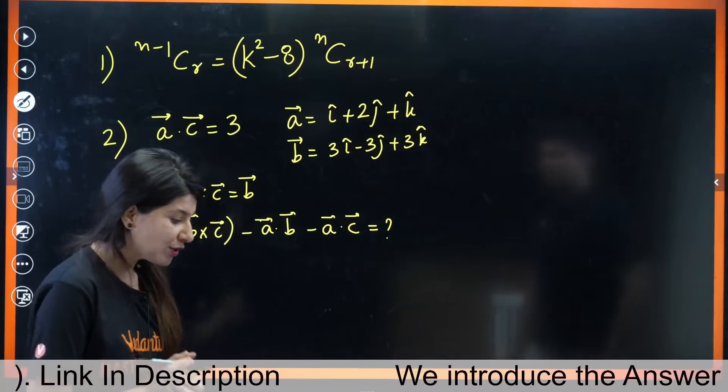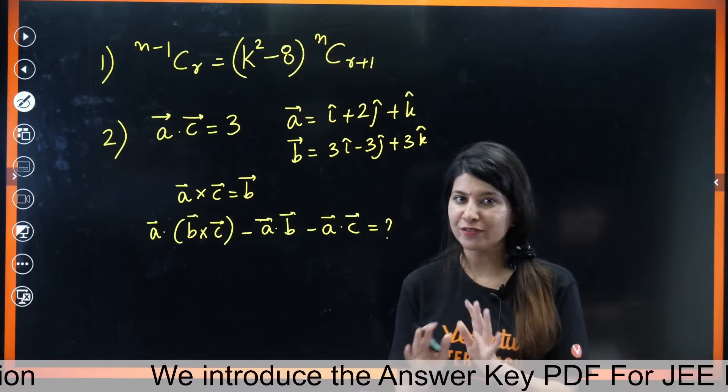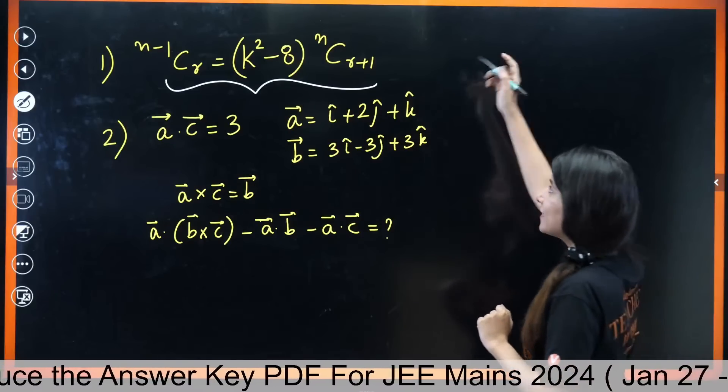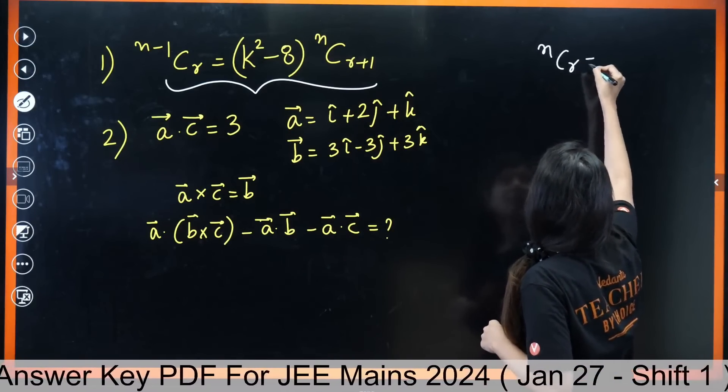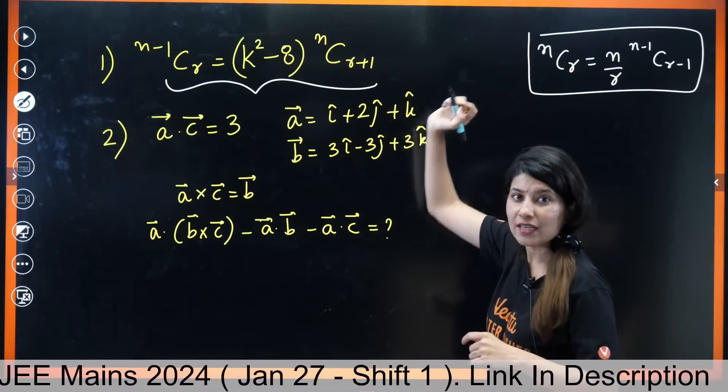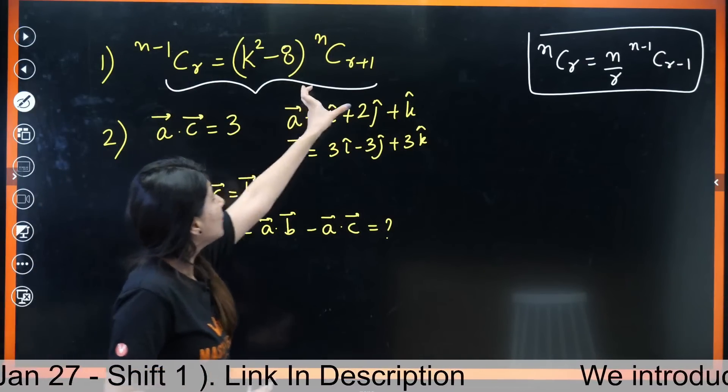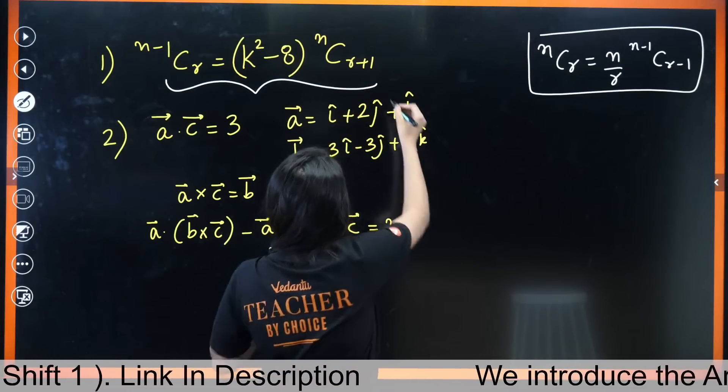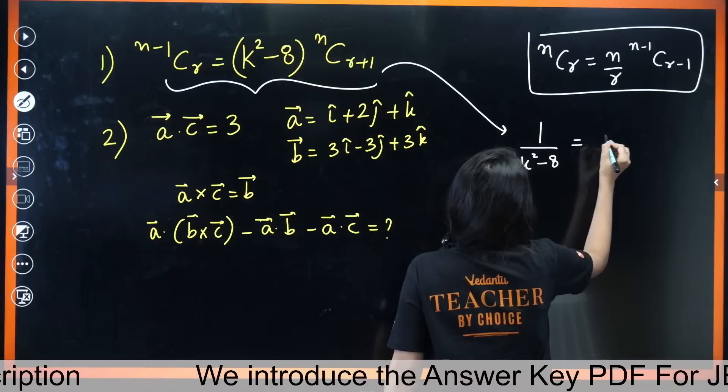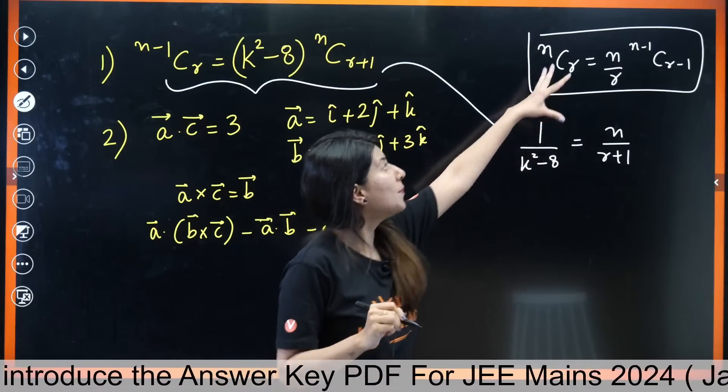The very first thing - in the reduced syllabus they have said that properties of binomial coefficient is not in the syllabus. So this was the question and we have solved it right away. I have used one property related to this question which was basically NCR can be written as n by r times n minus one C r minus one. We can use this property and solve this question. But you know what, without using this property also we can solve this question. We just need to expand n minus one C r and NCR plus one.